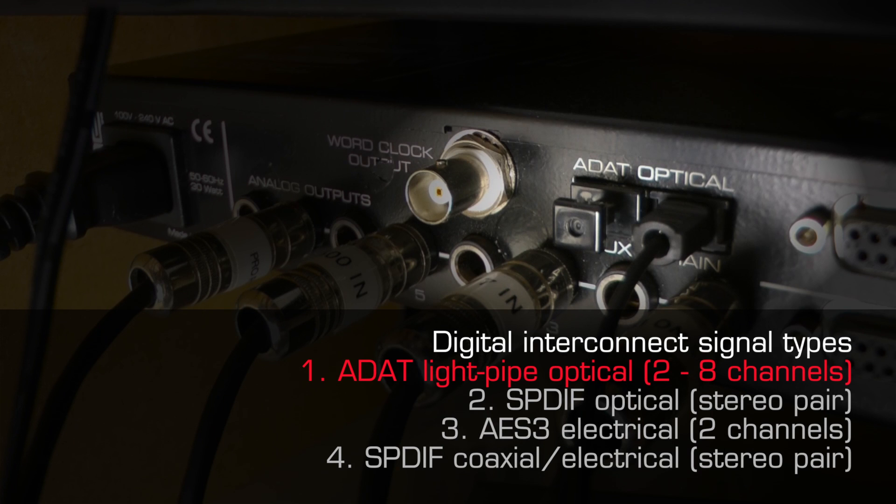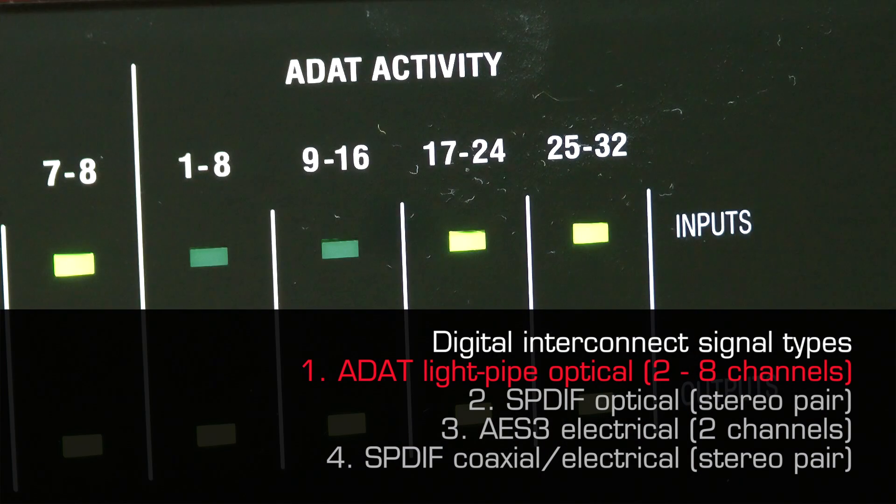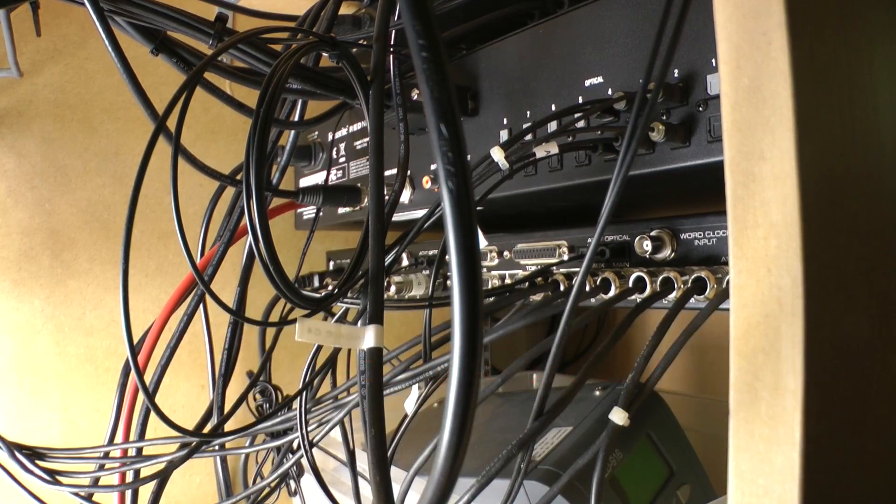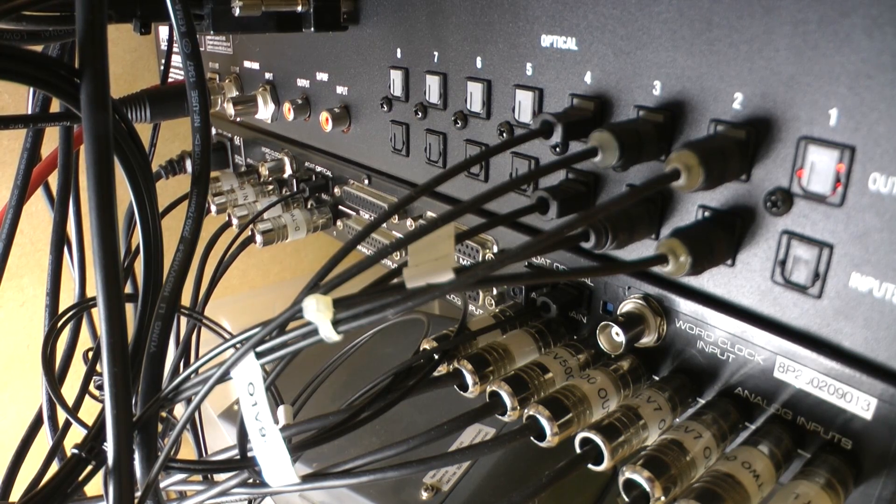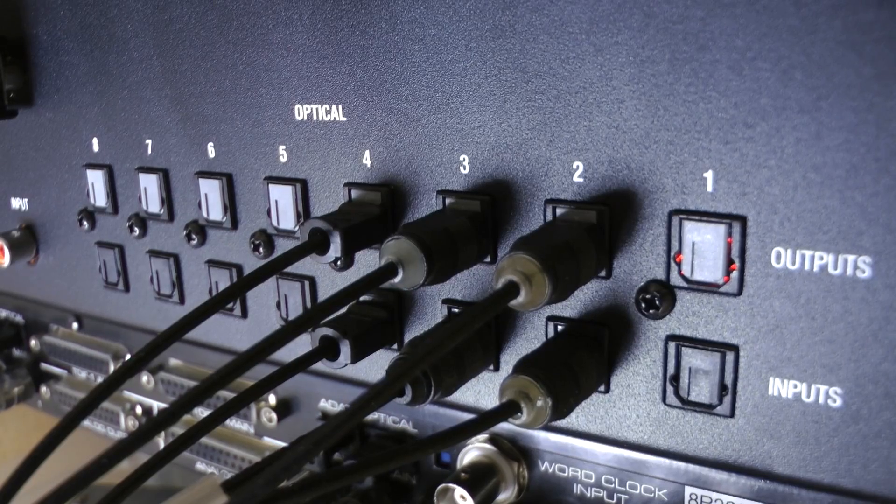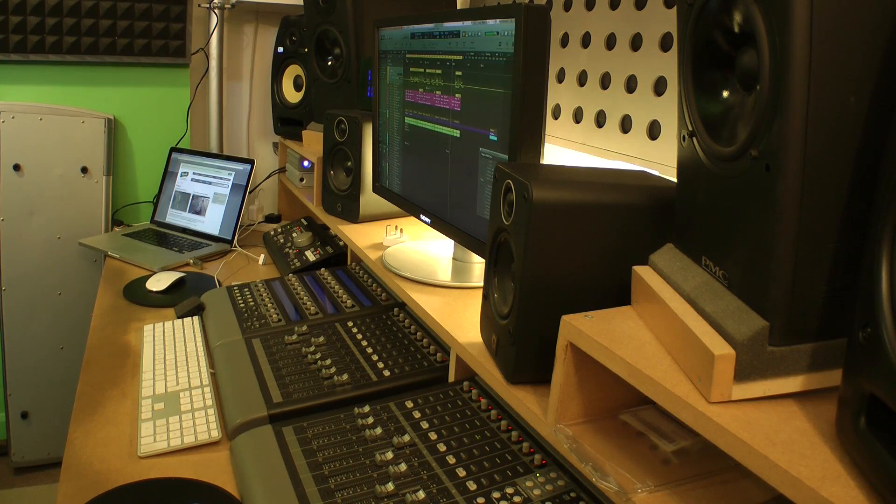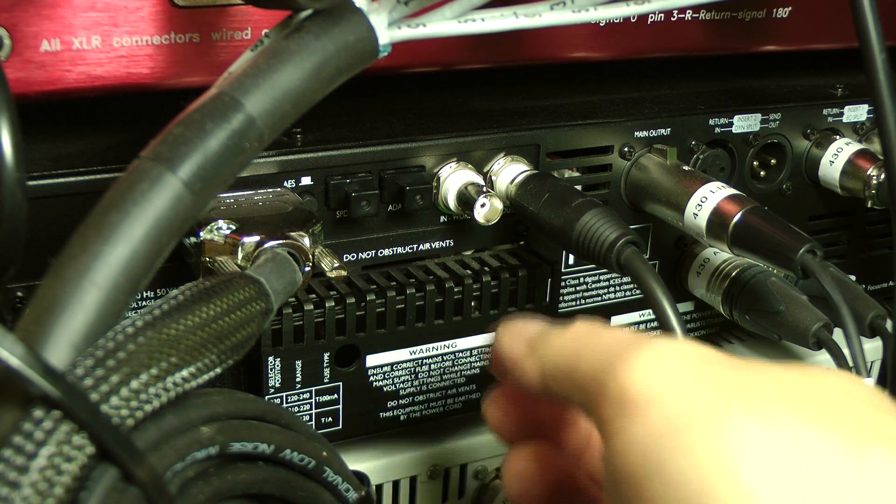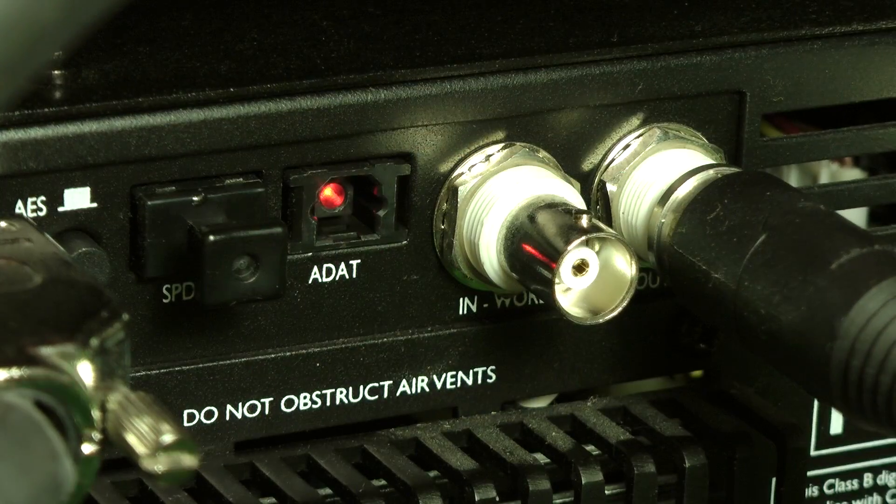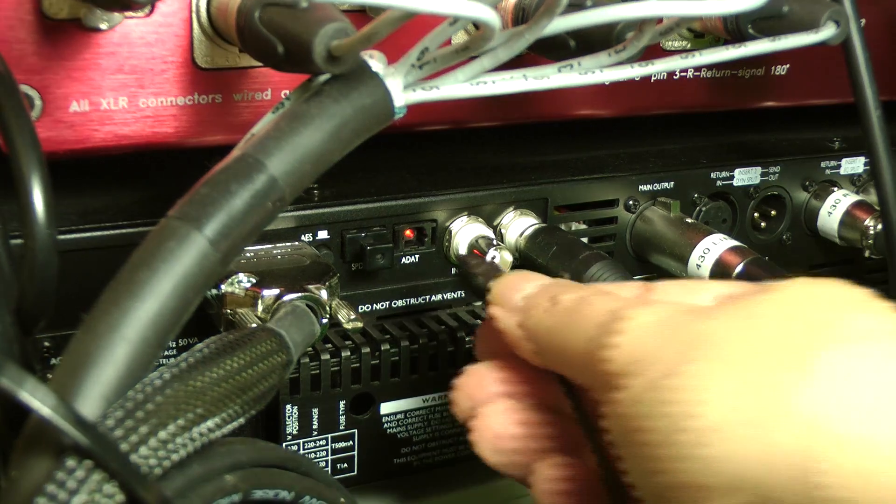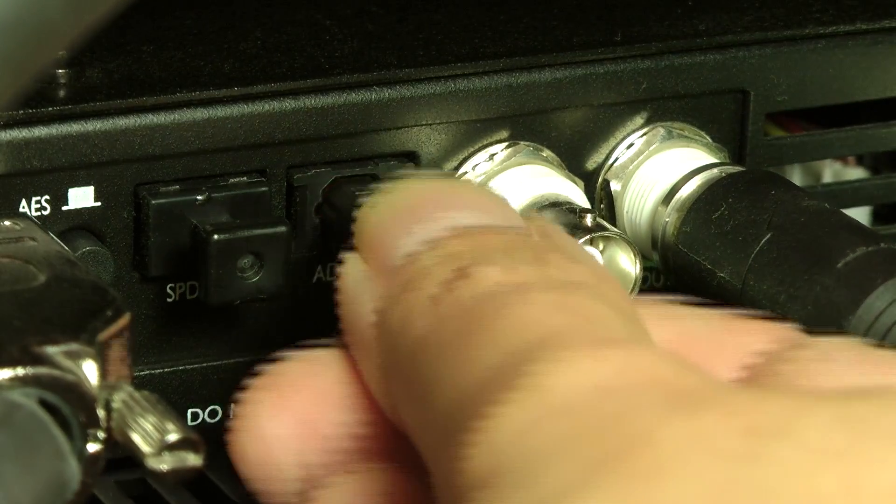The first format, known as ADAT light pipe, can carry up to eight channels of audio in a single data stream. It is used for a wide variety of professional applications such as connecting a digital mixing desk to a DAW via an audio interface. Another popular application is for connecting multi-channel analog to digital converters to audio interfaces.